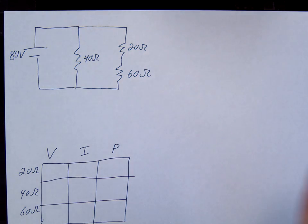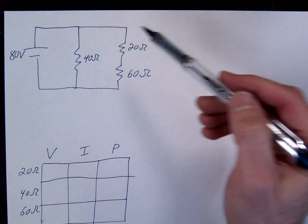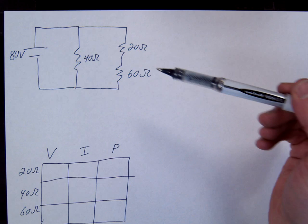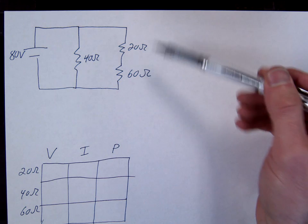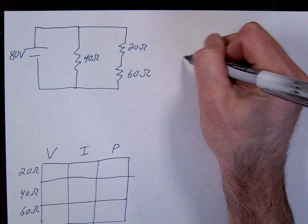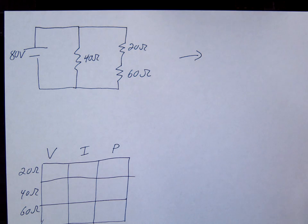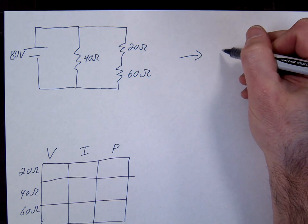So for this circuit, the first thing we're going to do again is simplify the circuit. When you look at it, you should notice 20, 60. How are these coming from? Series. We're going to first simplify that.